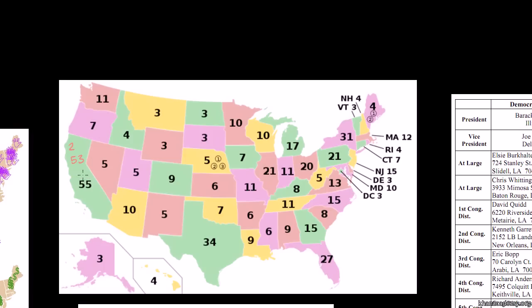Every state gets two senators, and the House of Representatives is dictated by population. California is a huge state with two senators and 53 representatives. Texas has two senators and 32 representatives. Louisiana has two senators and seven representatives. So the electors per state is based on senators plus representatives: that gives us 55 in California, nine in Louisiana, and 34 in Texas.